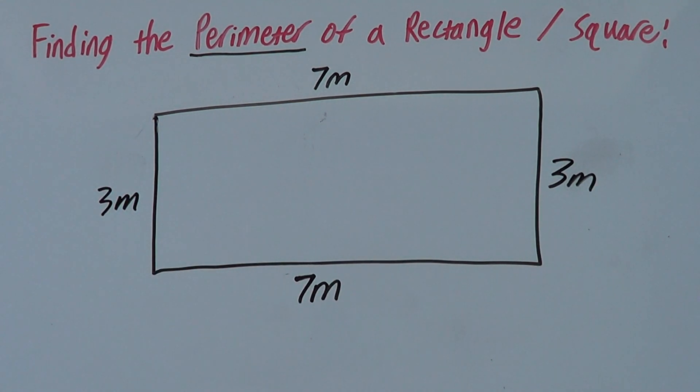And now we find the perimeter by adding up all of our sides. So we have 7 plus 7 plus 3 plus 3. 7 plus 7 is 14, plus 3 is 17.